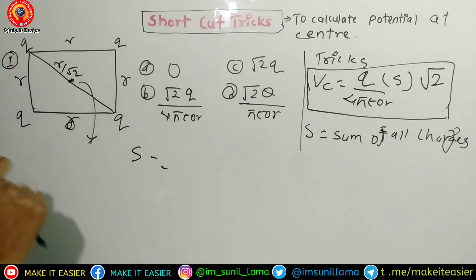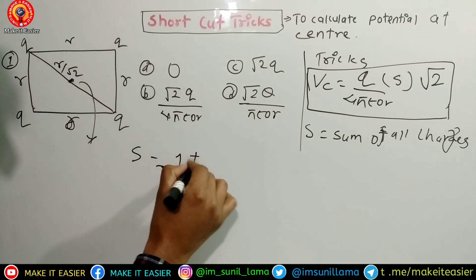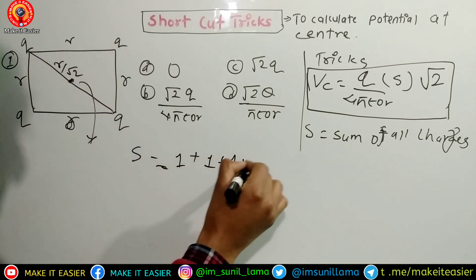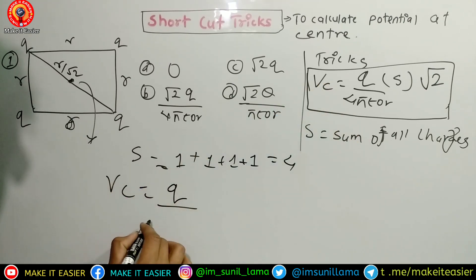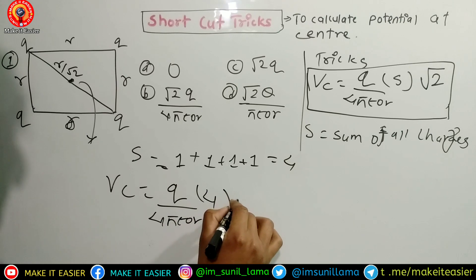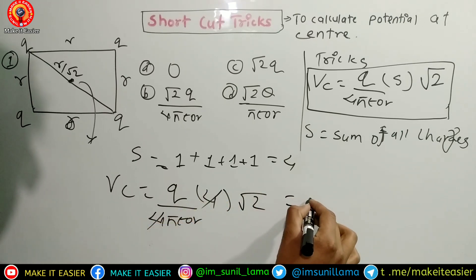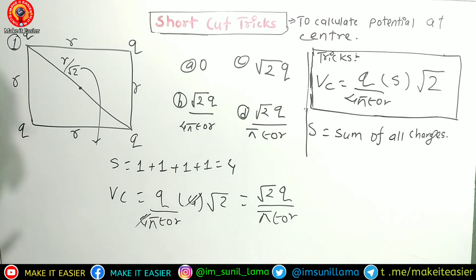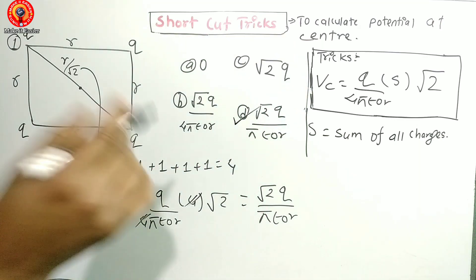Starting with trick one: for charge q at each corner, one plus one plus one plus one gives a total of four charges. Using V = q/(4πε₀r), and r equals side divided by root two, four cancels and the answer is √2·q/(πε₀r). So option D is the correct answer.